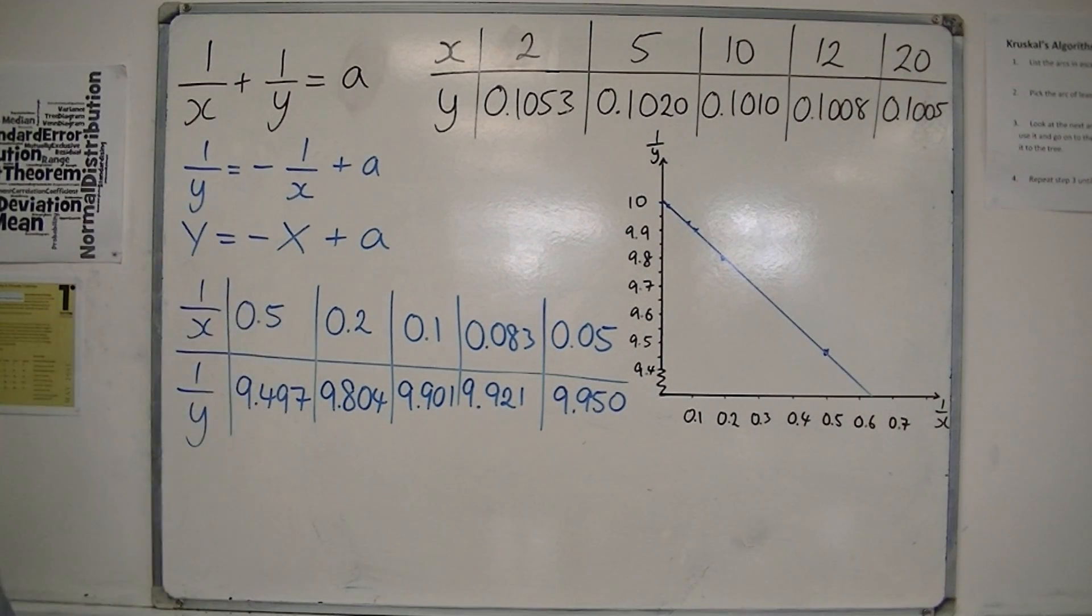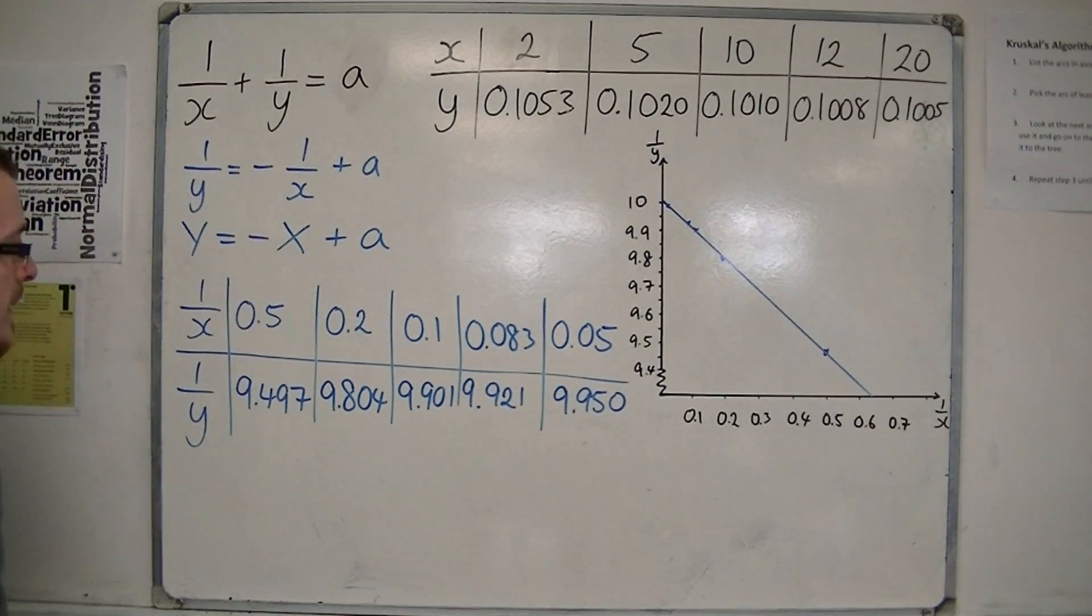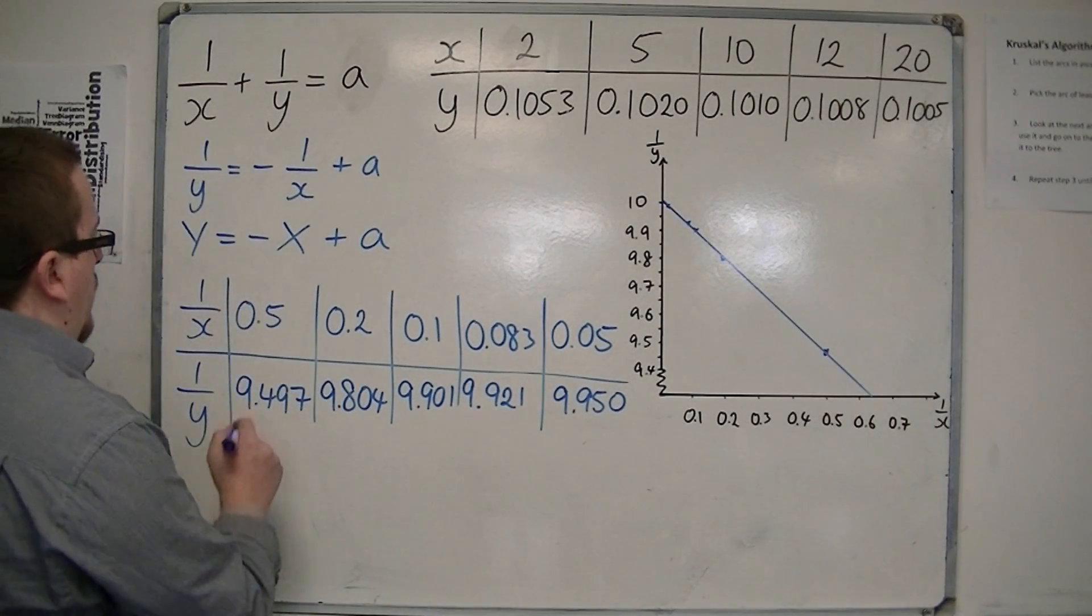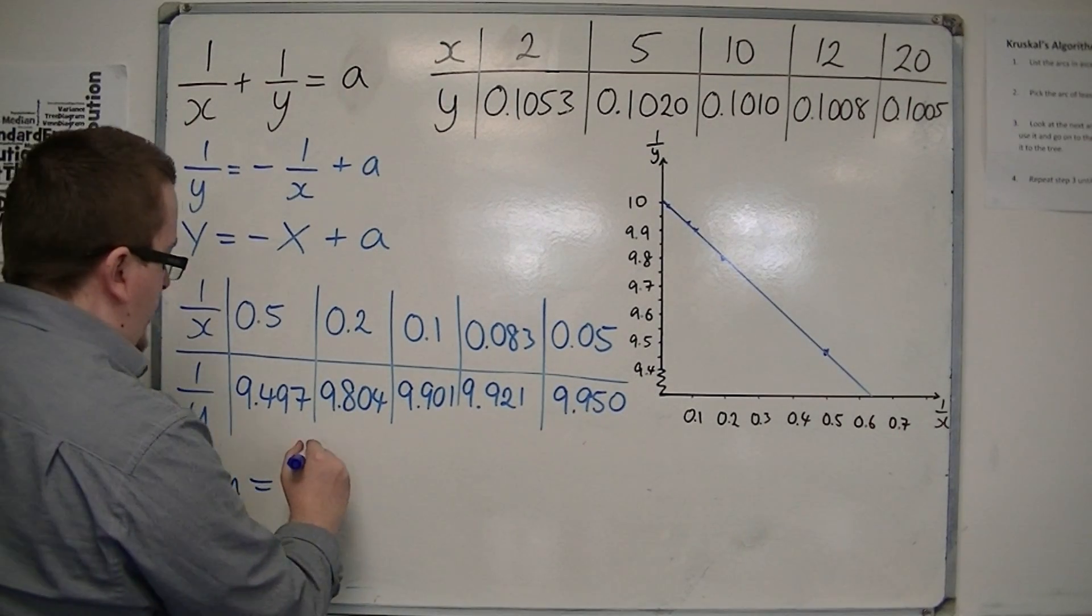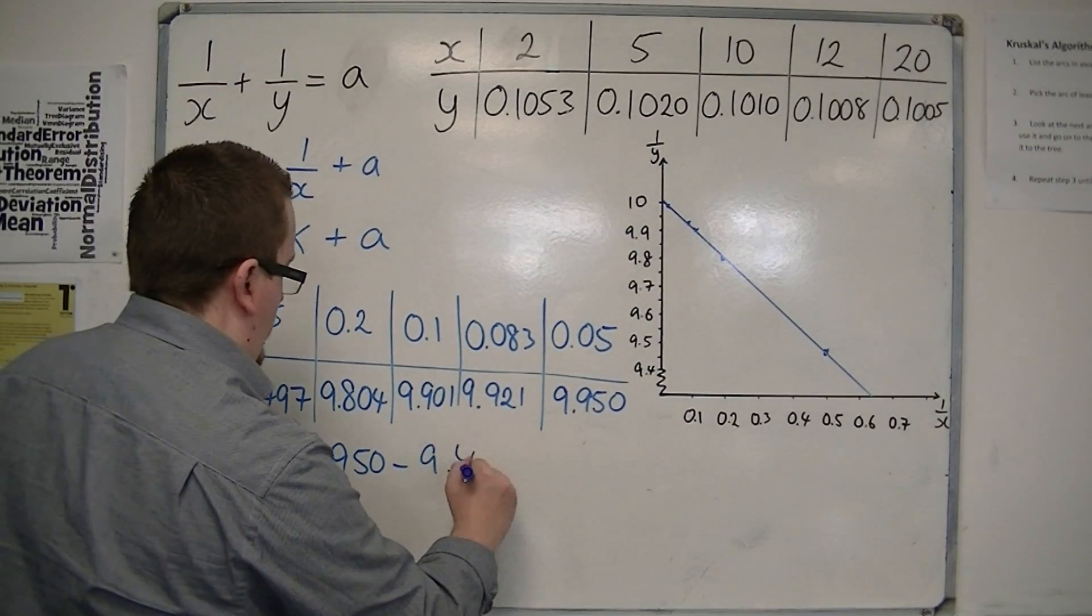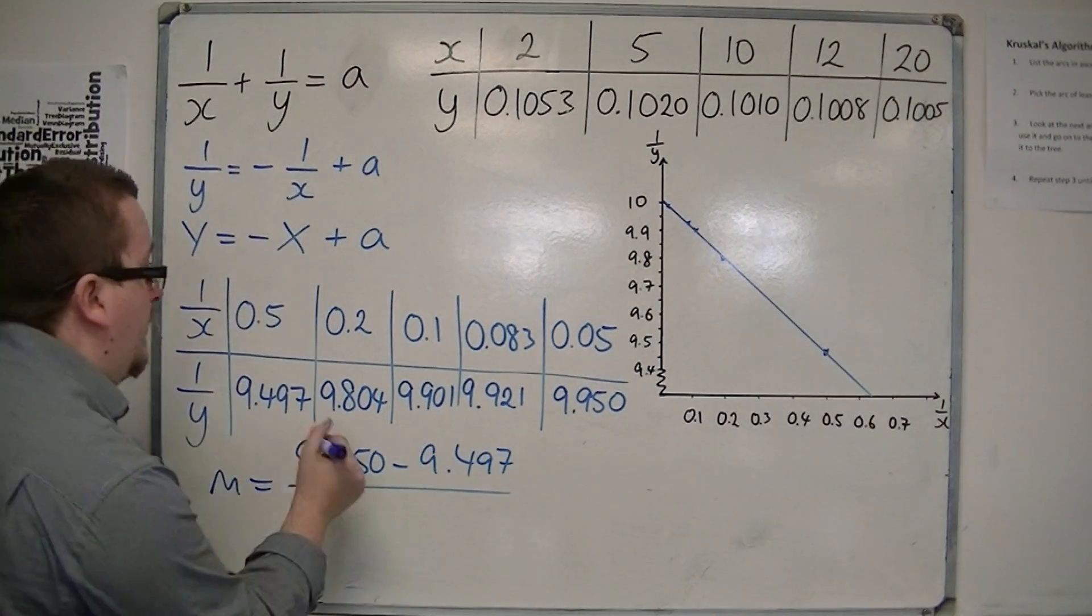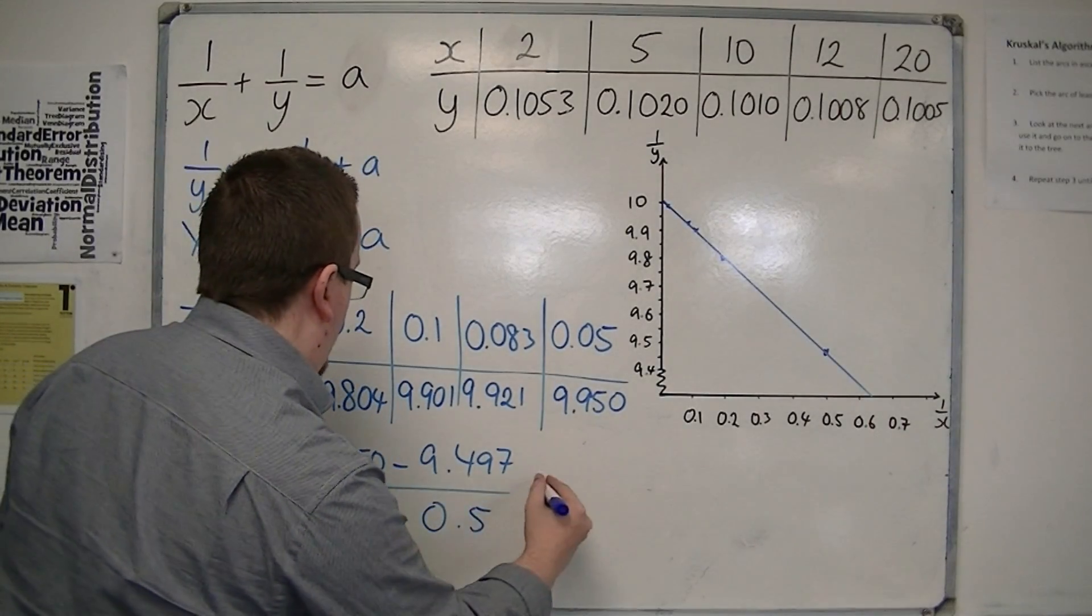The gradient should be minus 1, so we can check that. And if we choose two of the points, so let's say the first one and the last one, so the gradient of the line should be the difference in the y-coordinates divided by the difference in the x-coordinates, so 0.05 take away 0.5.